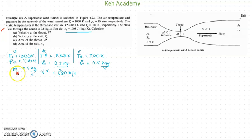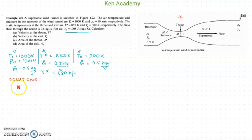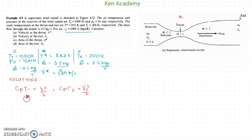Let me write down the equation for the solution. The compressible flow energy equation is: cp·T1 + V1²/2 = cp·T2 + V2²/2, where station 1 is the throat and station 2 is the exit.